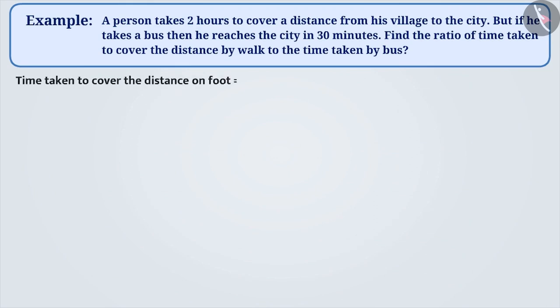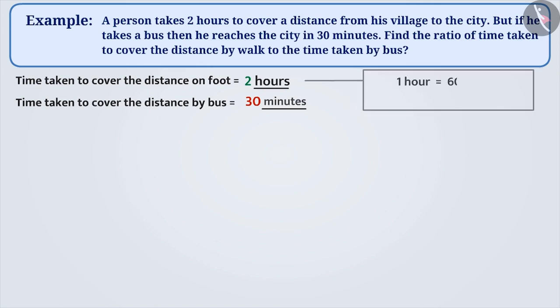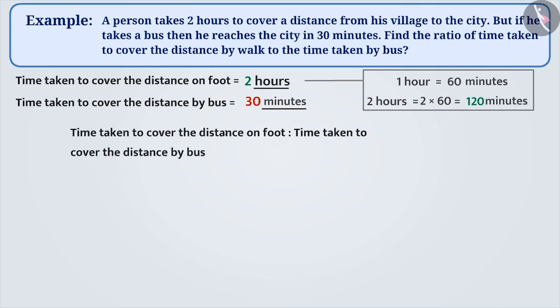In order to find the ratio between the time taken by the person by walk, that is 2 hours, to the time taken by the bus, that is 30 minutes, we first need to make the units the same. Since 1 hour is 60 minutes, 2 hours is 120 minutes. The ratio of time taken in covering the distance by walk to the time taken in covering the distance by bus is 120 is to 30.